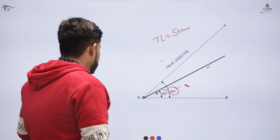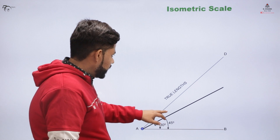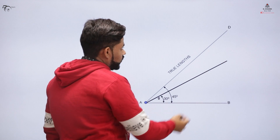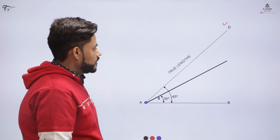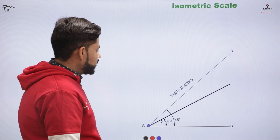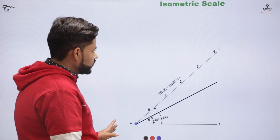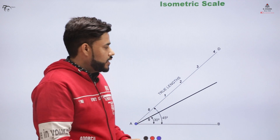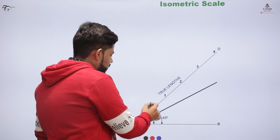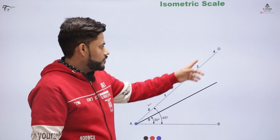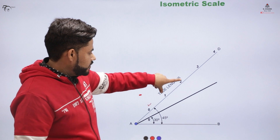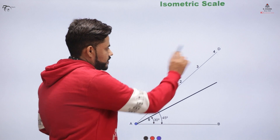I need to label that part as D. What I want is the isometric length from this true length — I need to convert this true length into the isometric length. The procedure is to divide this true length into a number of segments. Let's say this is 40 or 50 — I need to divide it into a number of segments, starting with point number 0, then 1, 2, 3, 4. So A to 0, 0 to 1, 1 to 2, 2 to 3, 3 to 4 — all are having equal lengths.